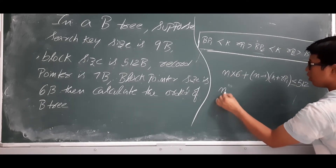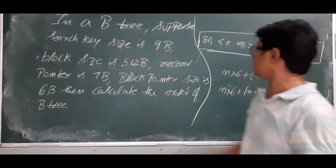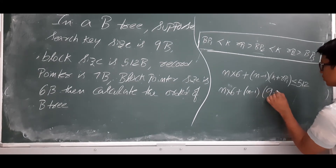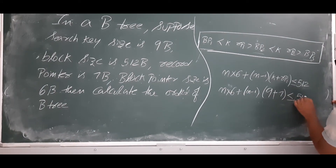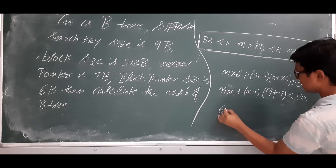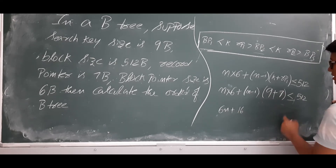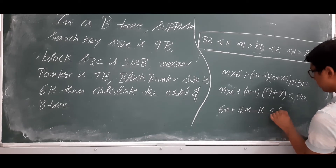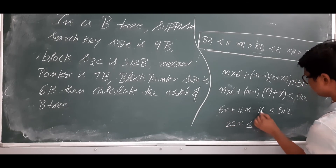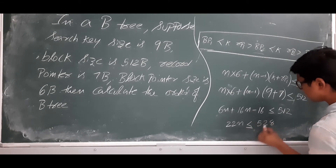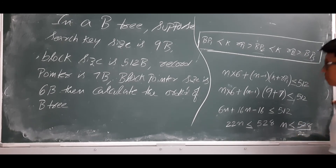Now we substitute the values. Block pointer size is 6, so: 6n plus (n minus 1) times (9 plus 7) is less than or equal to 512. This gives 6n plus 16n minus 16 is less than or equal to 512, which simplifies to 22n is less than or equal to 528.